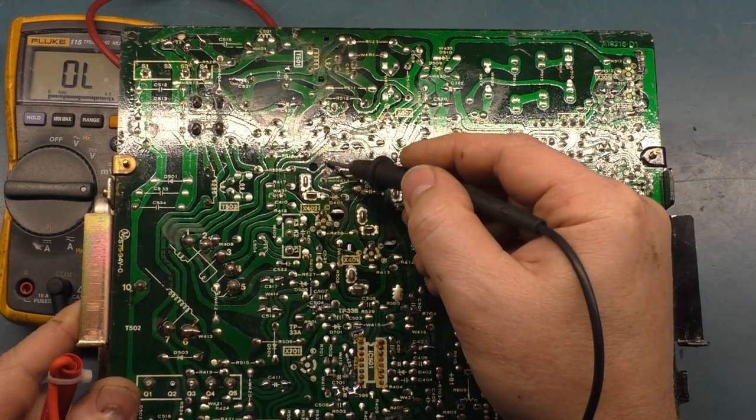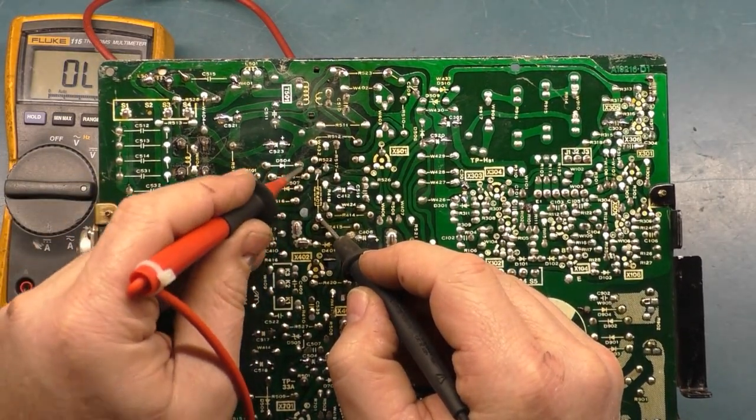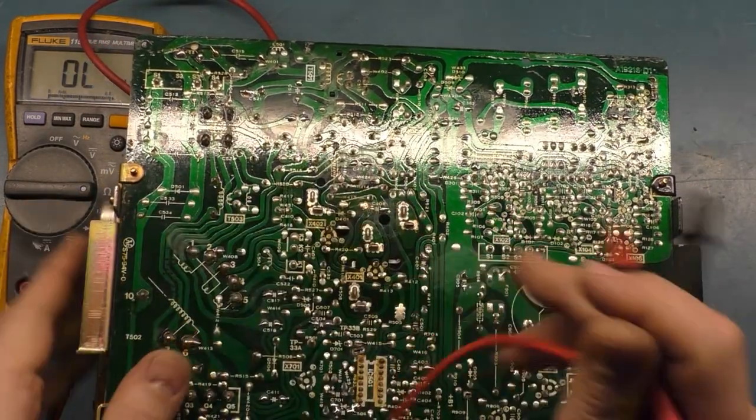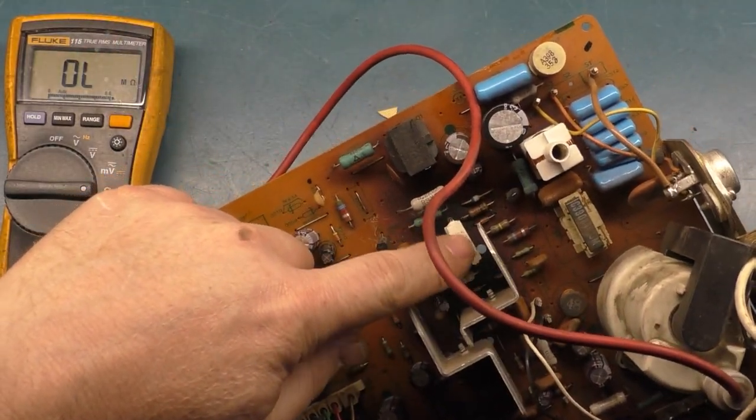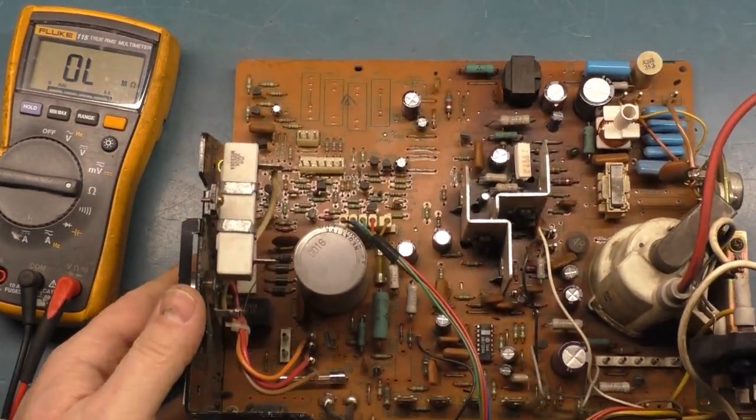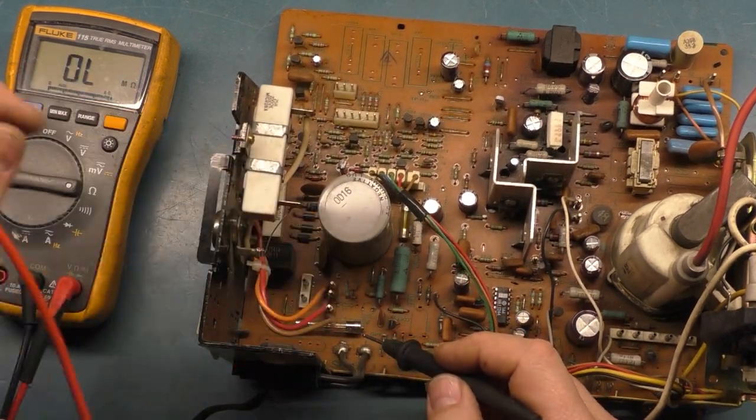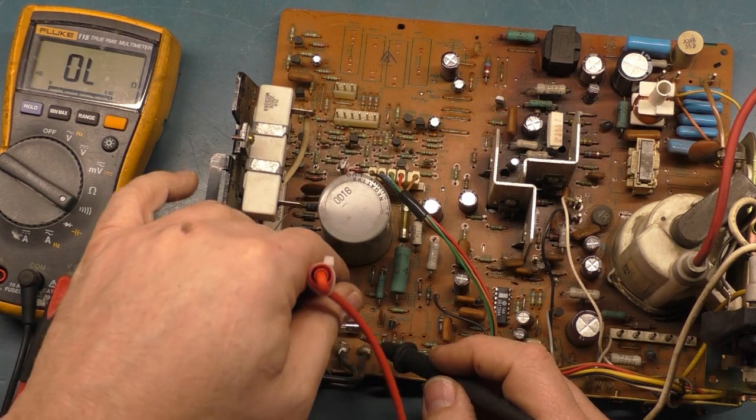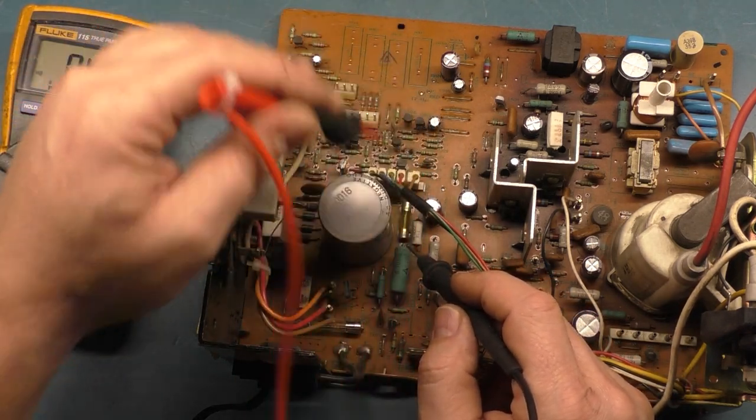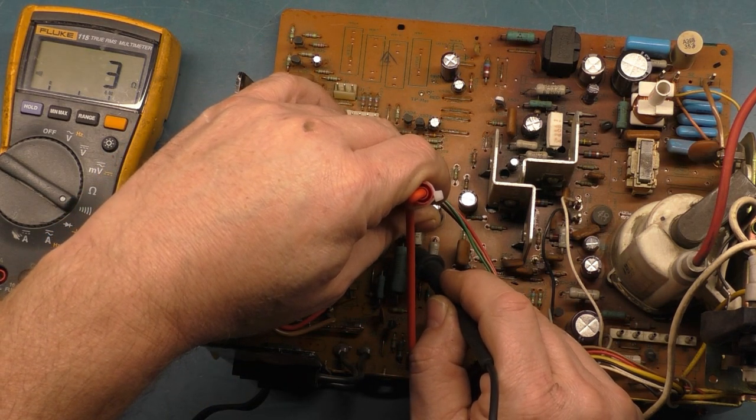Then we have FR401 fusible resistor 401 and it should be 68 ohms. And we get 69.5, close enough. Then we will go over to our fuses. Of course you got the main AC input fuse. Should be good. We'll just put on continuity. So that one's good. Then we have FR901 up here. We'll test that one. That one's good.